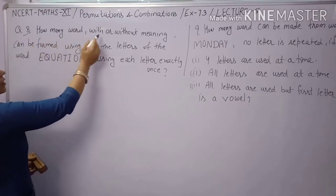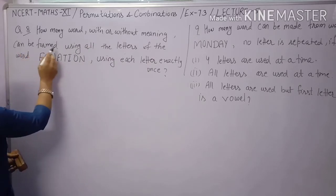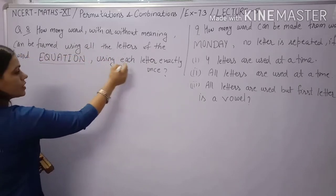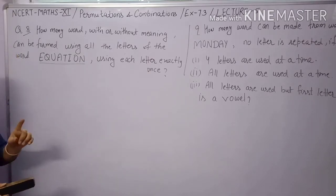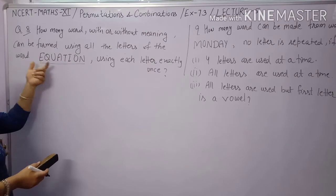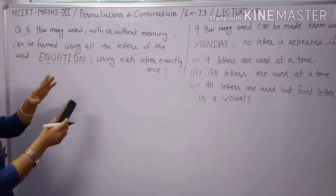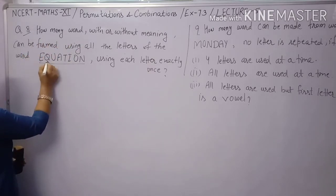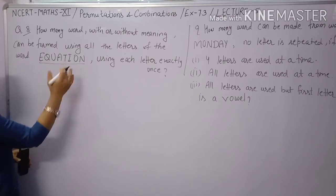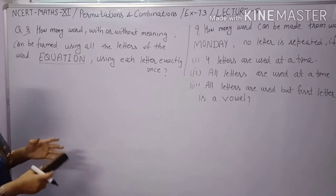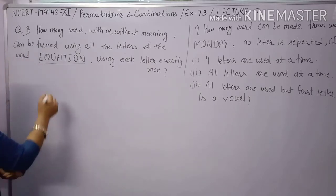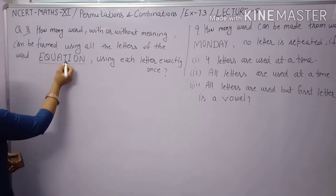Question 8: How many words, with or without meaning, can be formed using all the letters of the word EQUATION, using each letter exactly once? The letters are E, Q, U, A, T, I, O, N — all 8 different letters.